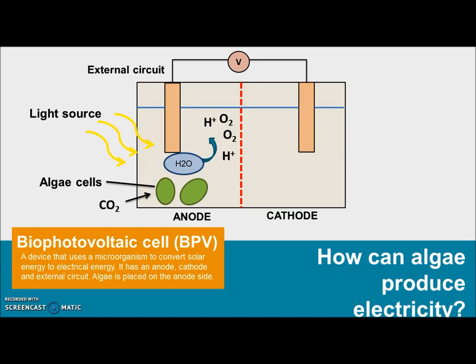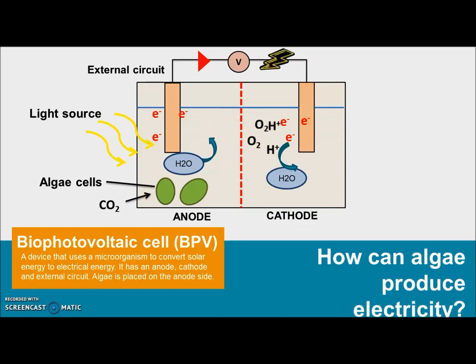In the process, electrons are generated. These electrons will then move to the anode and later move through the external circuit. This movement of electrons is what generates the electricity. The electrons will then reach the cathode, where the protons and oxygen grab the electrons, producing water back.